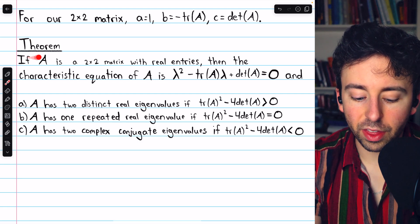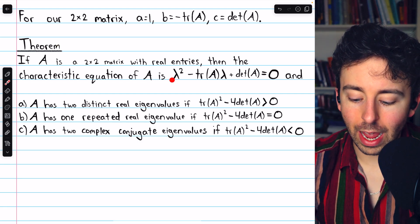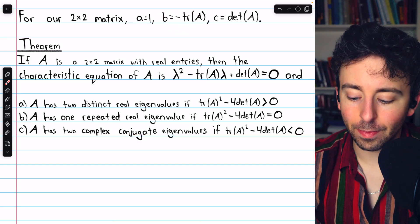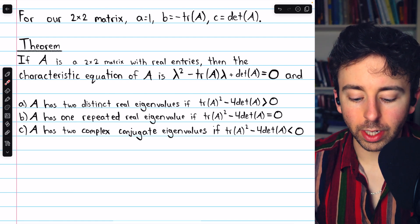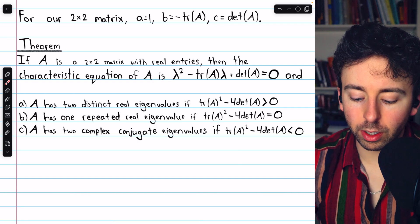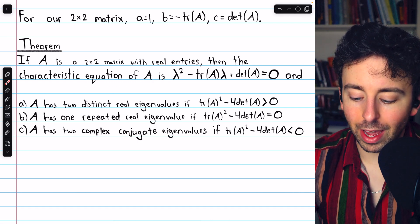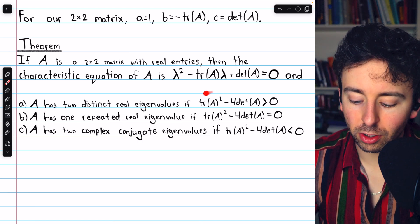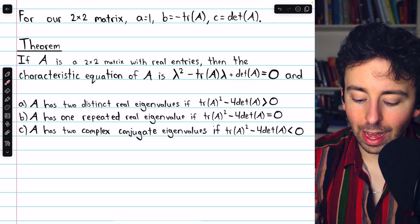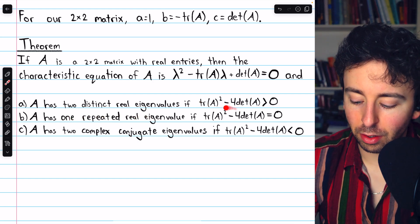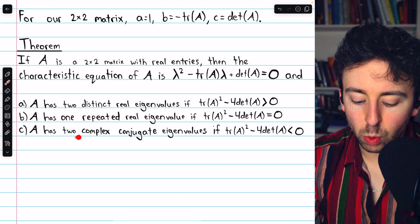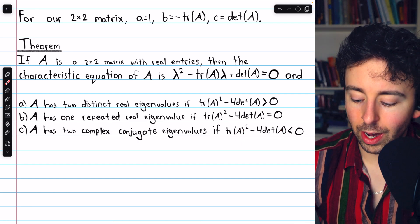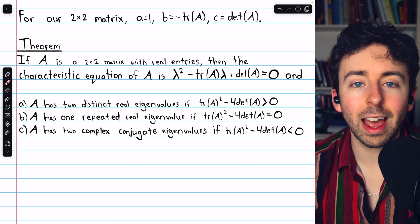This gives us the following theorem. For our 2x2 matrix, the leading coefficient a is 1, b (the coefficient of the λ term) is negative trace(A), and c (the constant term) is det(A). So if A is a 2x2 matrix with real entries, the characteristic equation has two distinct real eigenvalues if the discriminant trace(A)² − 4·det(A) is positive, one repeated real eigenvalue if the discriminant is zero, and two complex conjugate eigenvalues if the discriminant is negative.